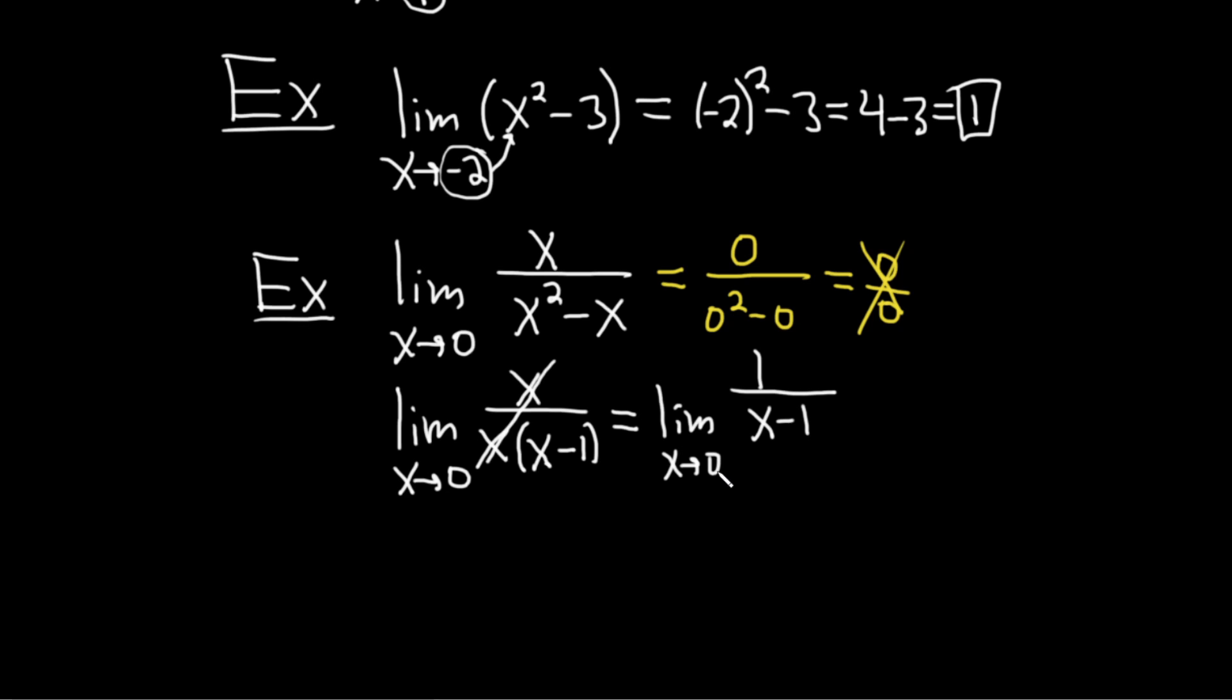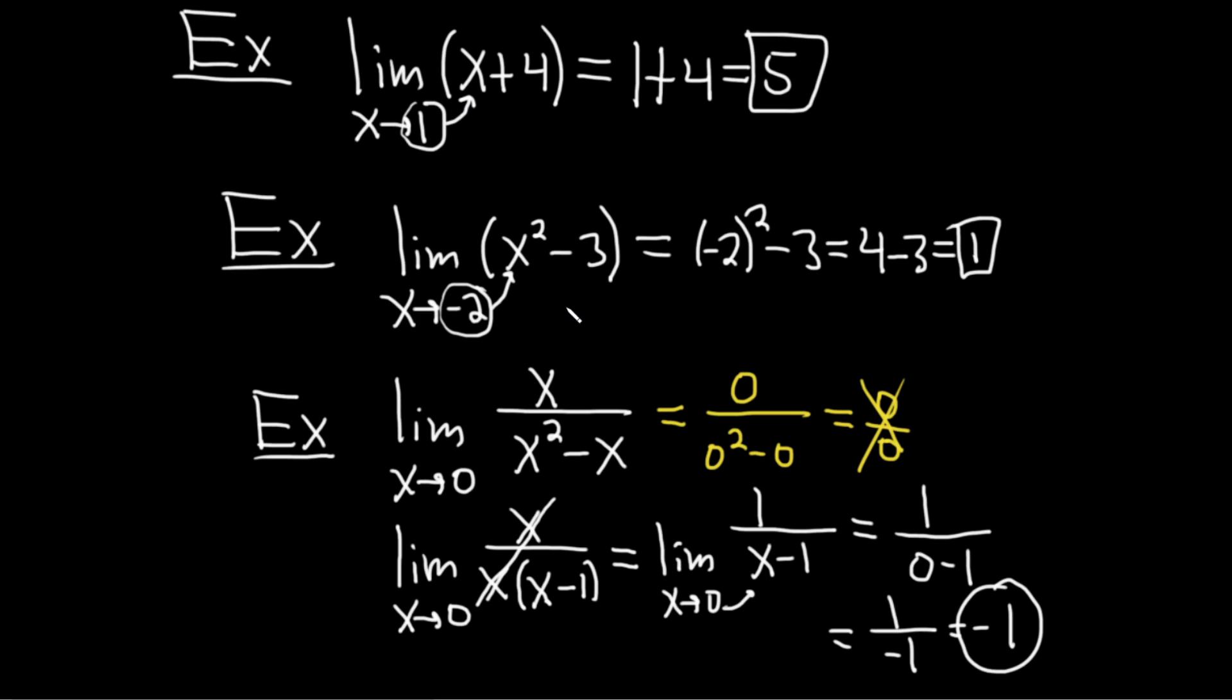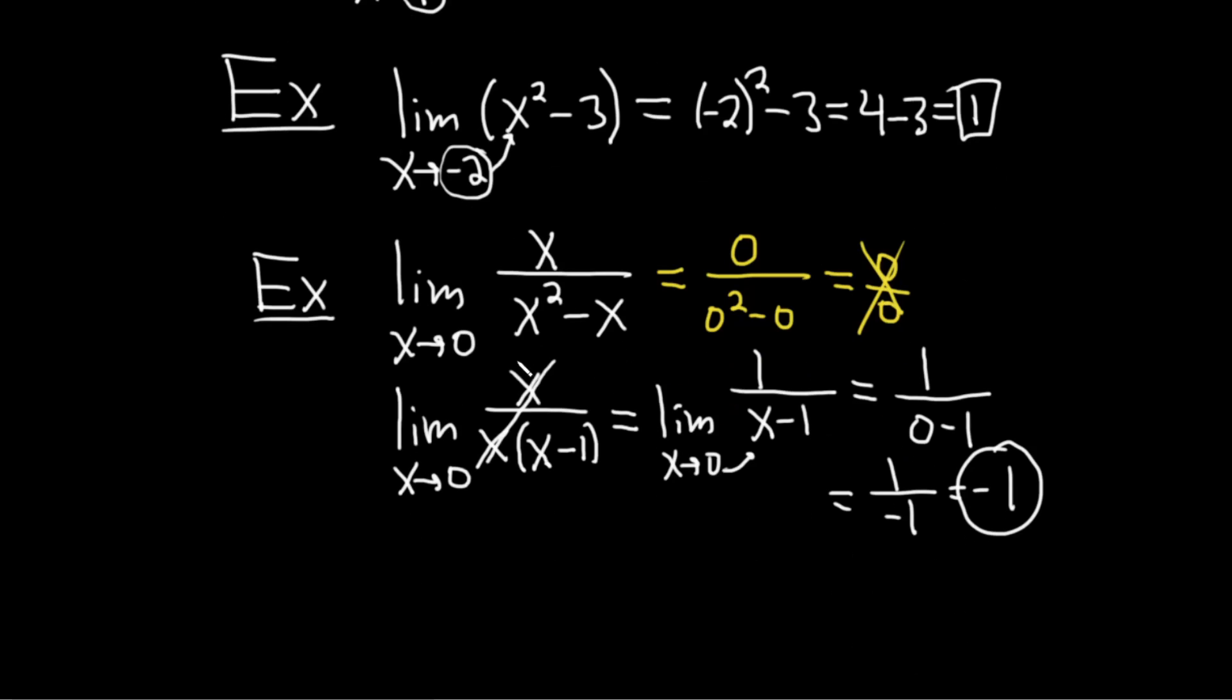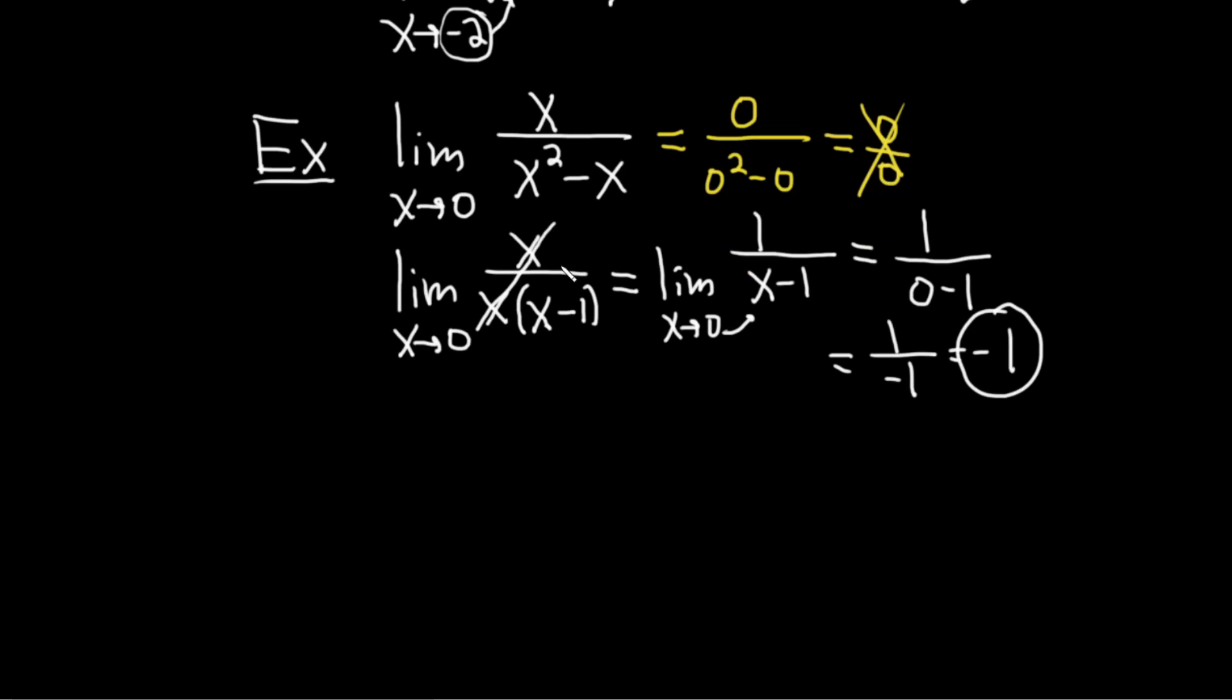Now, we are finally at a point where we can take this 0 and plug it in. So this is equal to 1 over, and then 0 minus 1, which is 1 over negative 1, which is just negative 1. Really nice. So, again, the general rule is if you can plug in the number and you get an answer, do it. If you cannot plug in the number, try something else. Factoring is one of the most important things that you can typically do in problems like this.